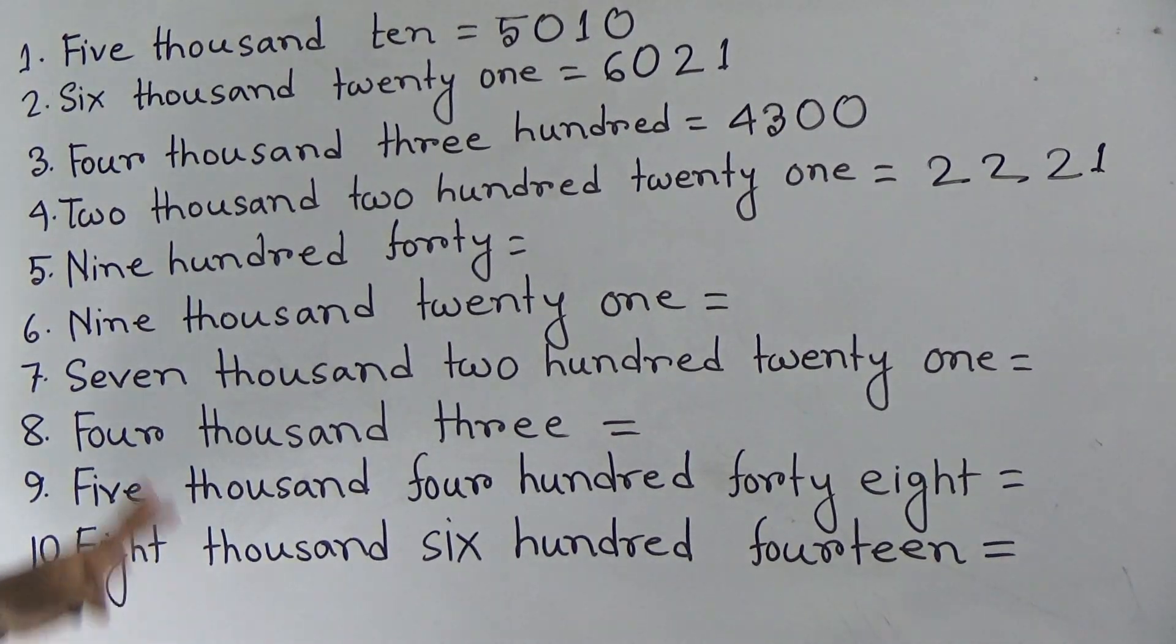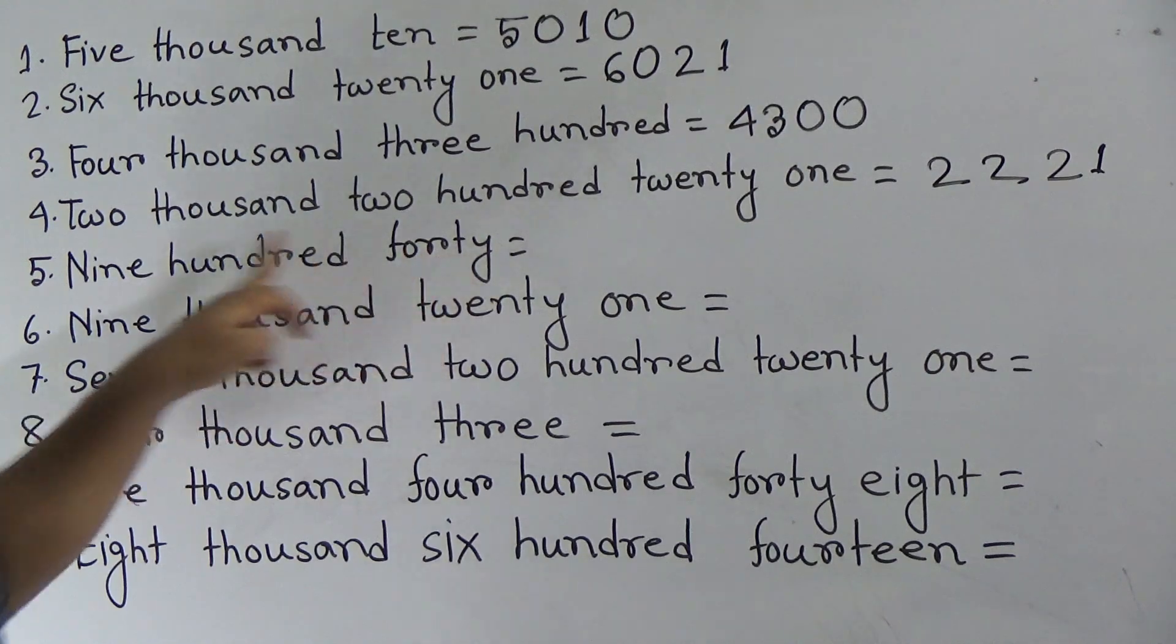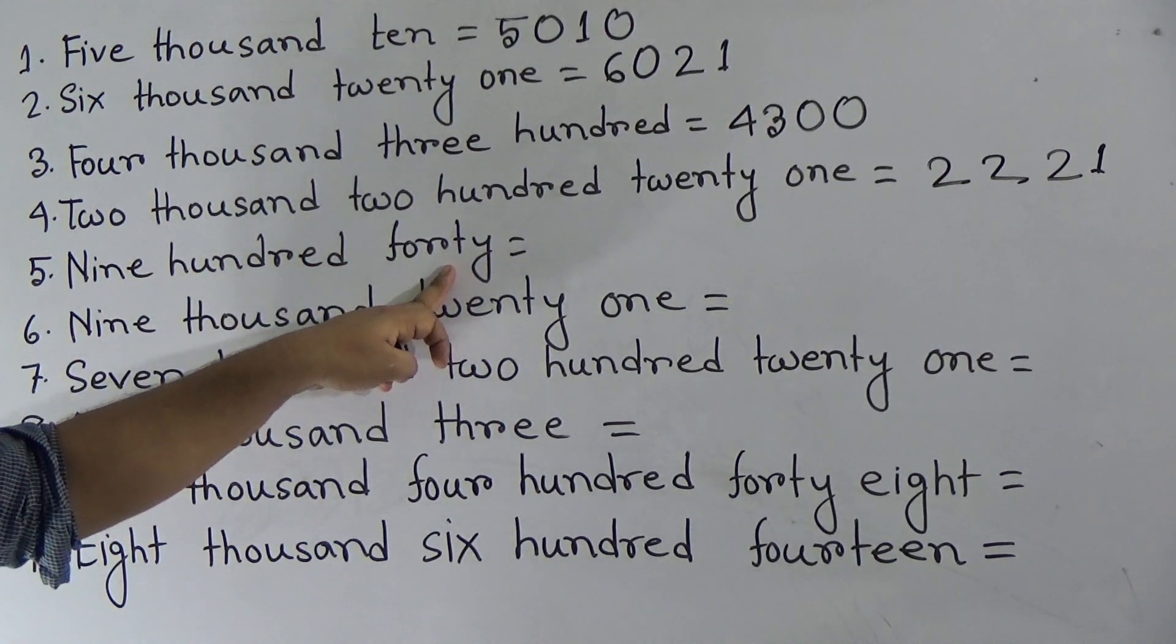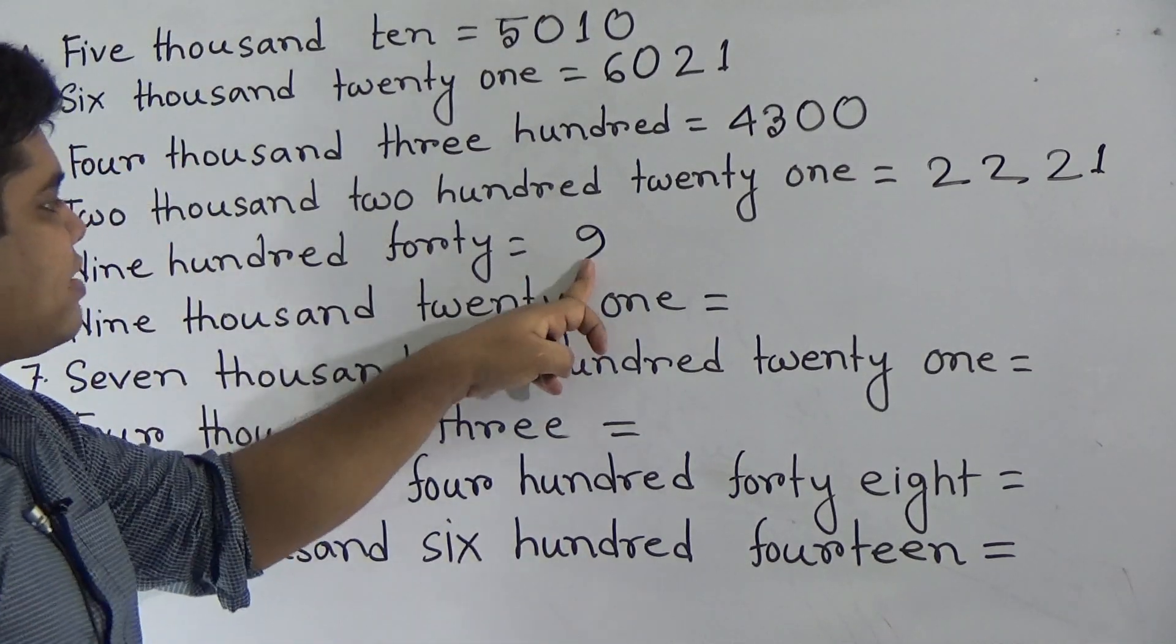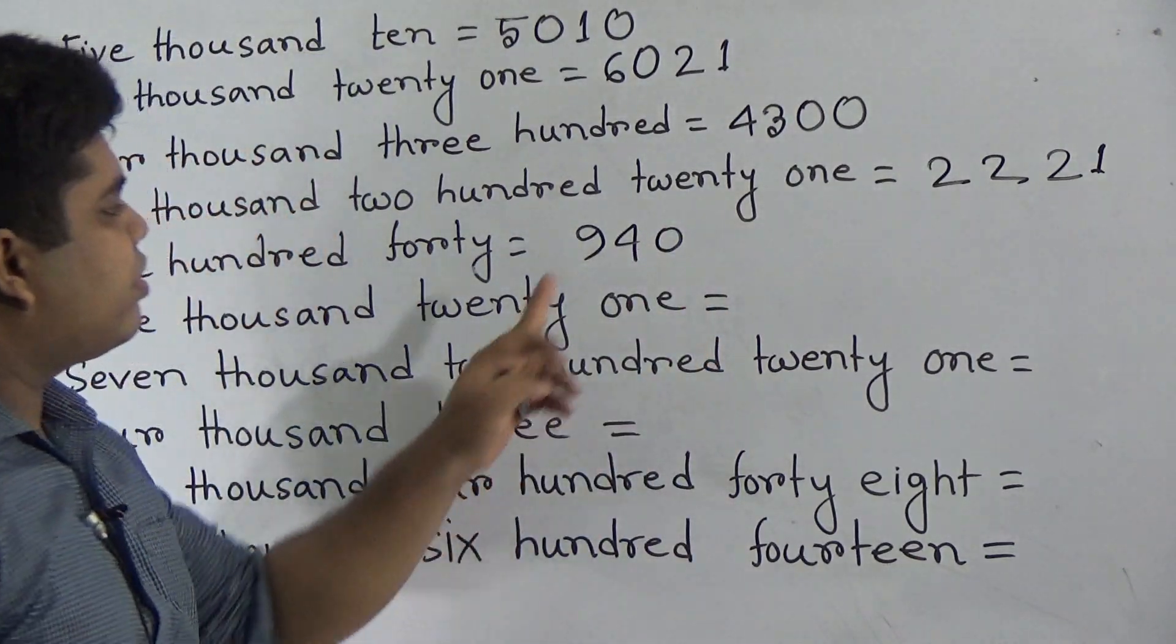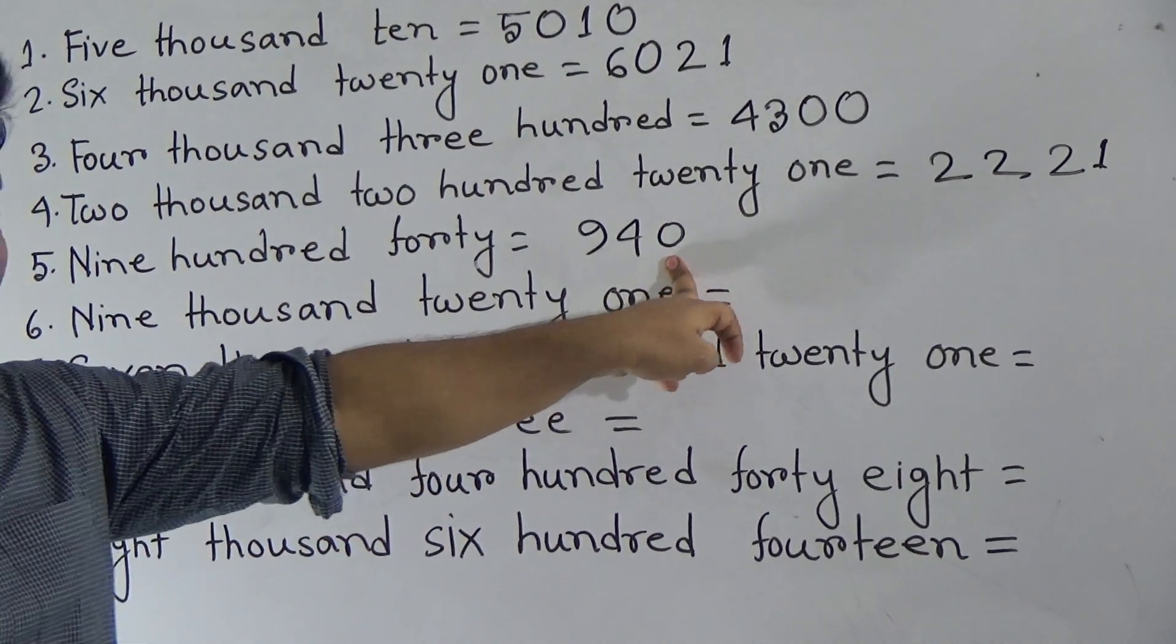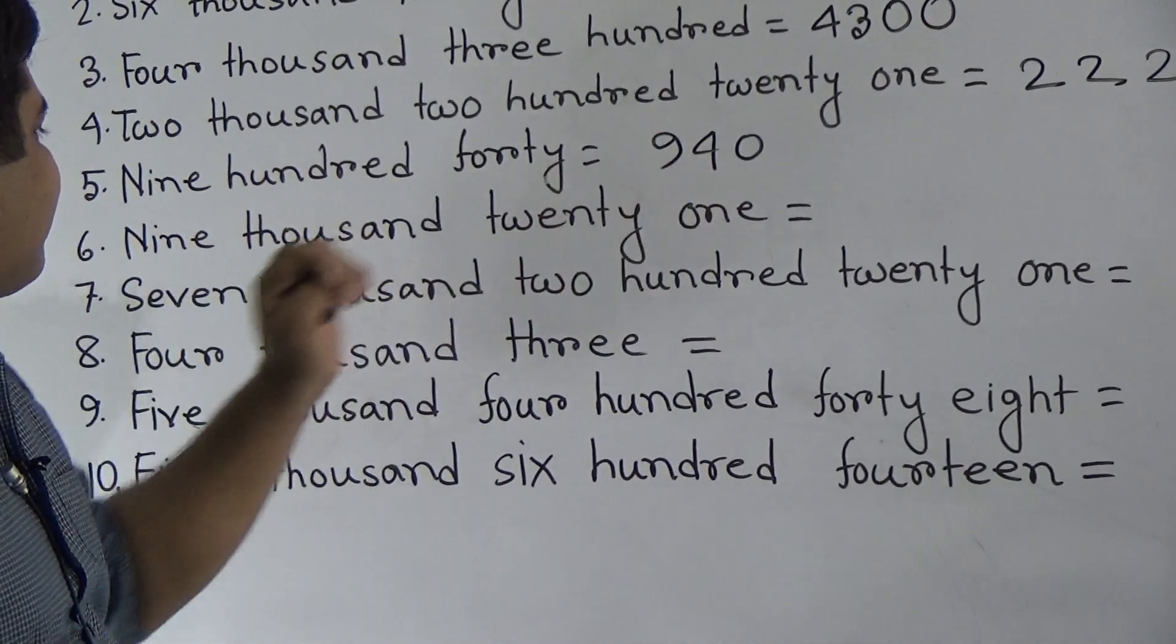Okay, we shall go to our next number, 940. So, we write 900 as 9. Then, write 40, 4, 0. So, 940.